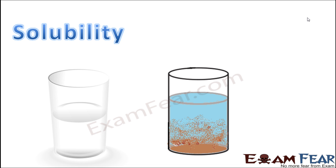Solubility — for example, think of a sugar solution. You put two teaspoons of sugar into water and mix it well. You get a watery liquid and you do not get to see the particles of the sugar because it gets completely dissolved in the water. So we say that sugar is soluble in water. Whereas if you take two teaspoons of sand and put it into water, it doesn't mix properly — you are still able to see the sand particles inside the water. So we say that sand is insoluble in water.